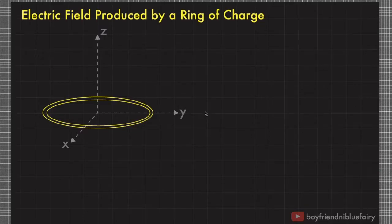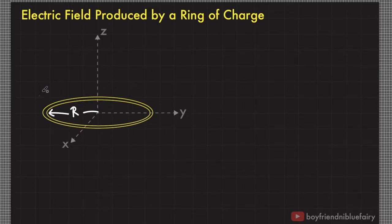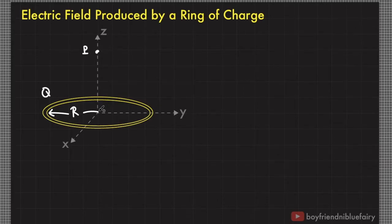As an example, let's derive the electric field produced by a ring of charge. Consider this three-dimensional coordinate system xyz. A ring of charge of radius R and total charge Q is situated on the xy-plane, and we want to measure the electric field at a point along the z-axis. The distance of this point from the origin is z.